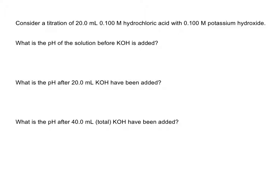Let's consider a titration with 20 milliliters of 0.1 molar hydrochloric acid and 0.1 molar potassium hydroxide. To understand this titration, we first write our balanced equation: HCl(aq) + KOH(aq) → KCl(aq) + H₂O(l). Since we have a strong acid and a strong base, we just have a single-direction arrow — this isn't an equilibrium reaction.